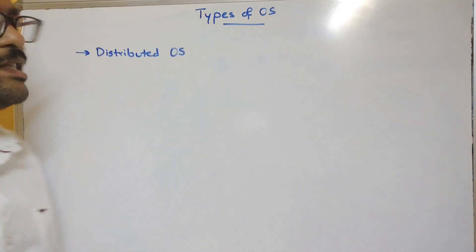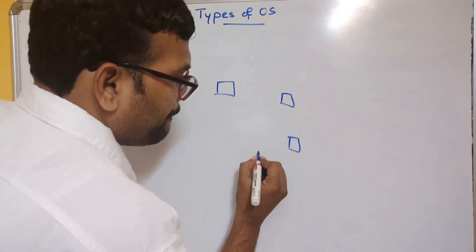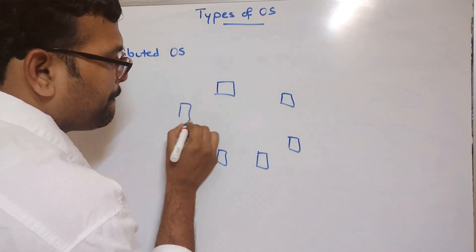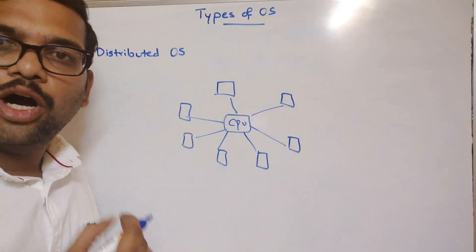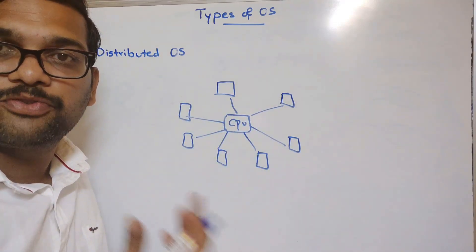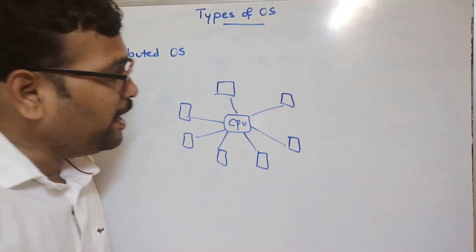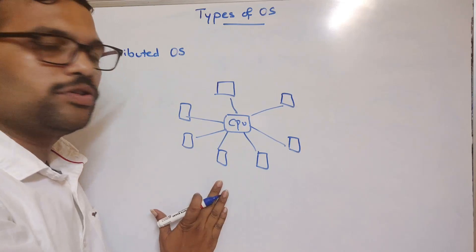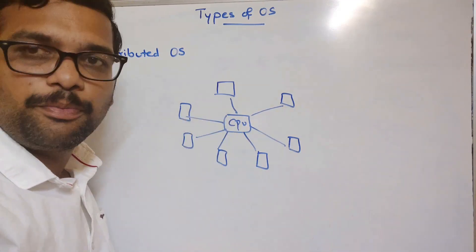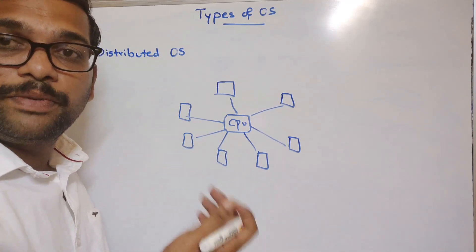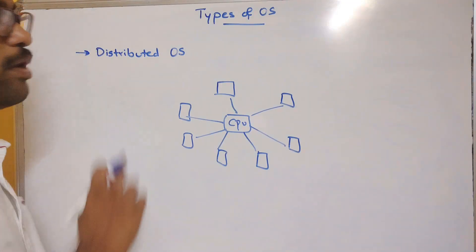The next type is the distributed operating system, also called a network operating system. There are many computers connected together, and jobs are distributed to different processors across the network. Multiple processes can execute simultaneously, and if any one processor fails, the remaining processors continue without much impact. The jobs are distributed throughout the network, with connections between all systems — that is a distributed operating system.